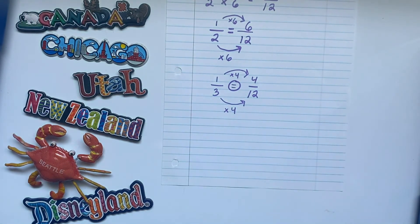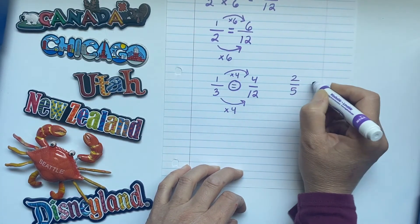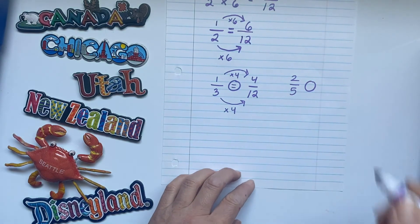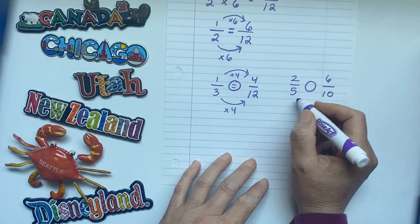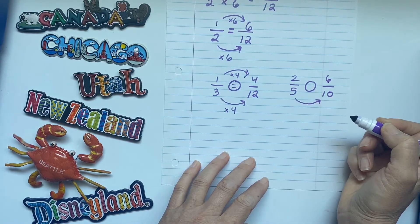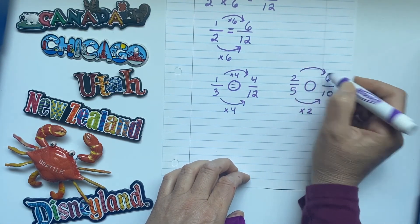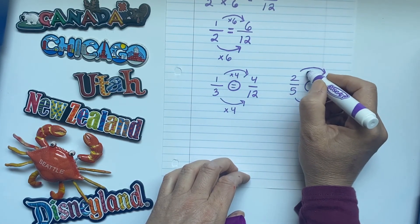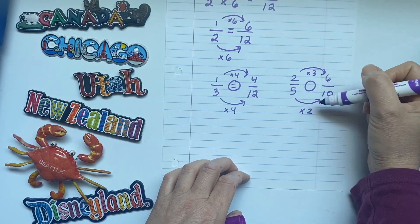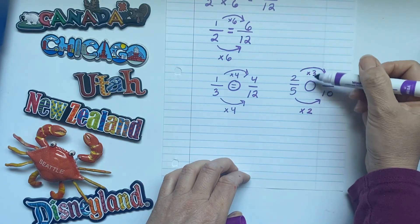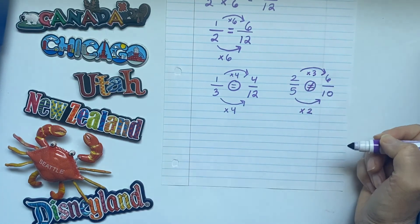Let's say I have another fraction comparison: two fifths compared to six over ten. I ask myself: how did I get from 5 to 10? I multiplied by 2. Then how did I get from 2 to 6? I multiplied by 3. Is the multiplier the same for the numerator and the denominator? No. That means I am not multiplying by 1, which means I am changing the value. So two fifths and six over ten are not equivalent.